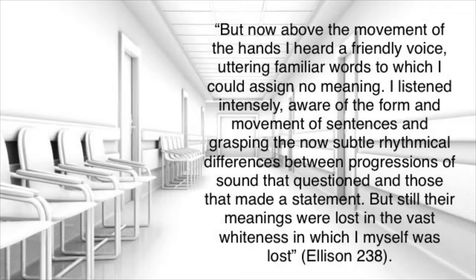"But now, above the movement of the hands, I heard a friendly voice, uttering familiar words to which I could assign no meaning. I listened intensely, aware of the form and movement of sentences, and grasping the now subtle rhythmical differences between progressions of sound that questioned and those that made a statement. But still their meanings were lost in the vast whiteness in which I myself was lost." Invisible Man is described as being covered head to toe in white. Ellison uses this description to depict the confusion and loss of self that the narrator is experiencing. The narrator is further severed from his past life and himself, and feels greatly disoriented by all the white. This is a metaphor for white empowerment and how the narrator is lost and confused behind the white control.